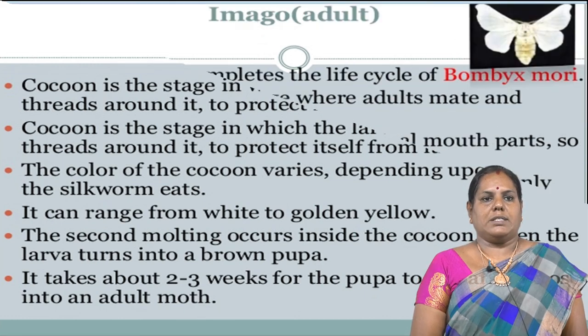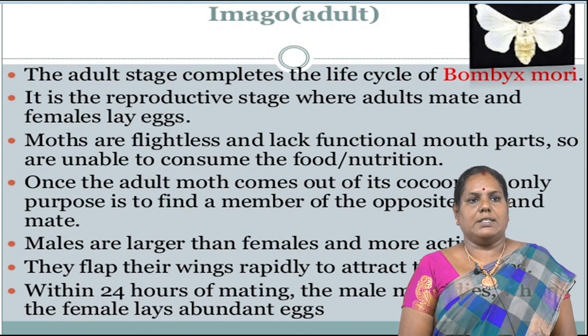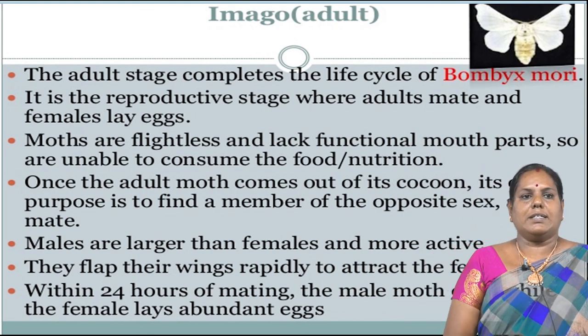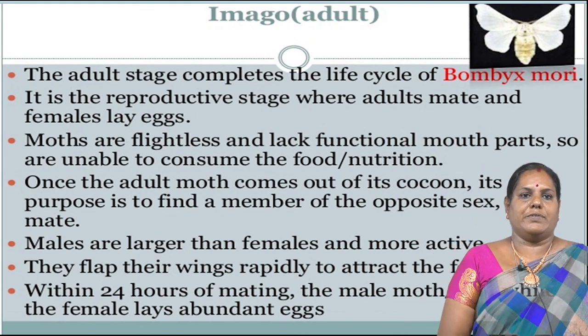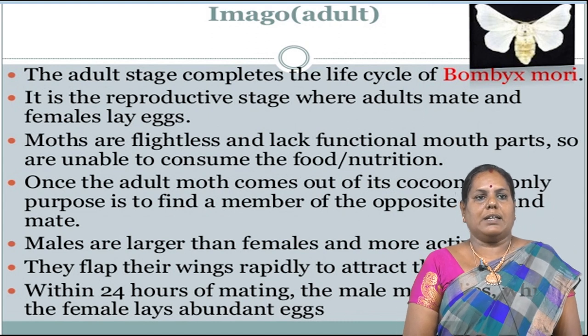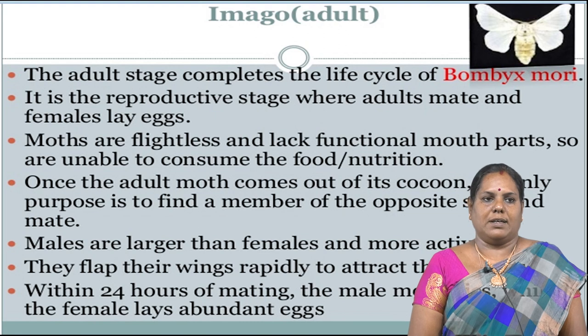The next stage is the imago, that is the adult stage. This is the final stage. The adult stage completes the life cycle of Bombyx mori. It is the reproductive stage where adults mate and the female lays eggs.